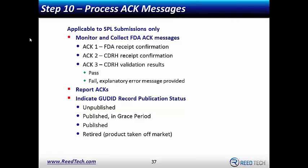A system you use should report these acknowledgments — they come back in text and XML — and it's better to have a system decode them from the cryptic messages the FDA sends. The other reporting activity is tracking your publication status. There are four basic lifecycle steps at the FDA: data comes in as unpublished, then depending on a date embedded in the document it goes into published mode, there's a seven-day grace period that terminates, and then most of its life it sits in published mode. If that product comes off market, it will be retired and that data record updated.